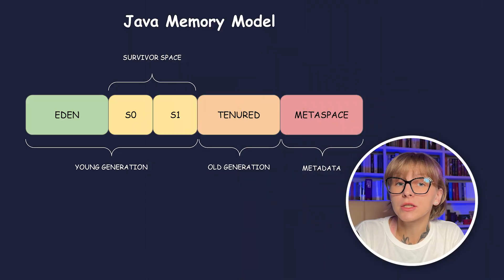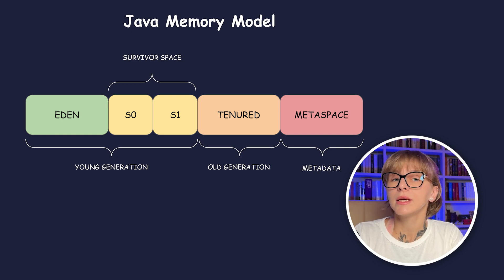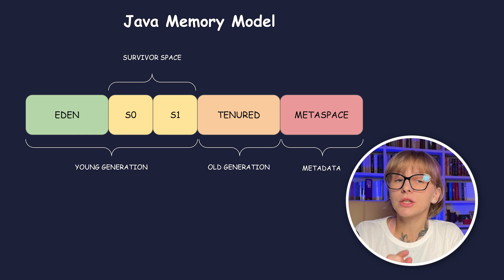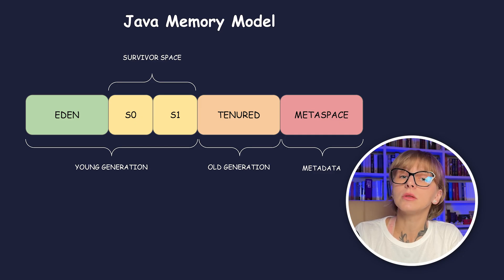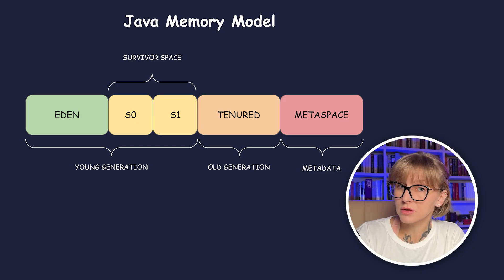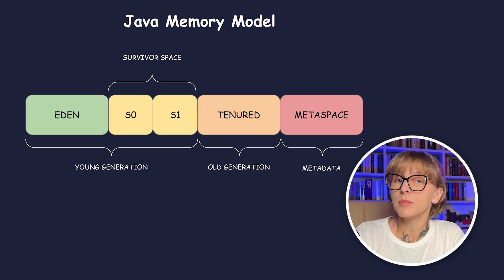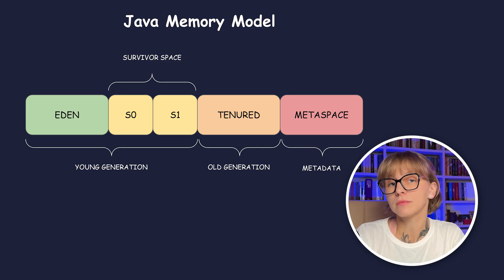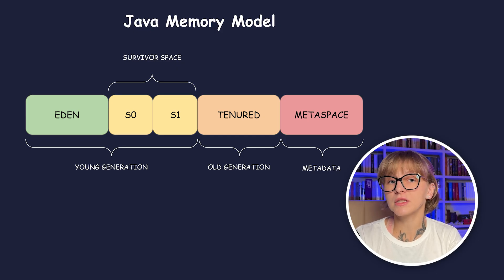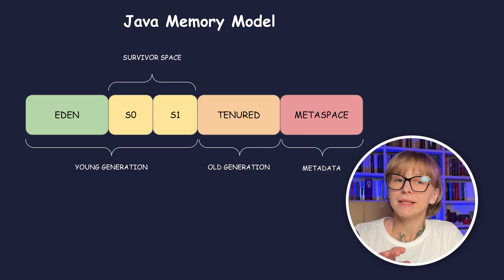One of the functions of Java garbage collection is managing objects in generations. Newly created objects belong to the young generation. As a rule, most objects die young, but if they don't, they are promoted to the old generation, or tenured generation. These generations occupy different spaces on the JVM heap.